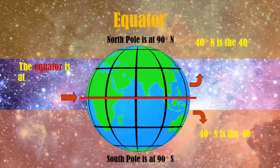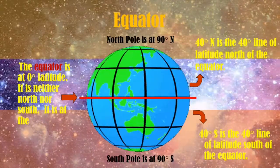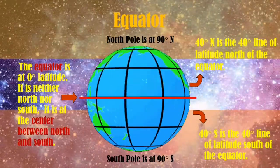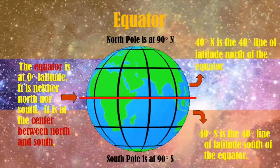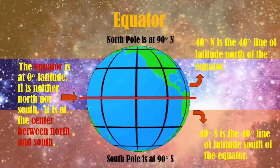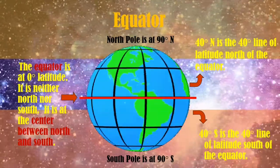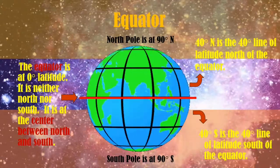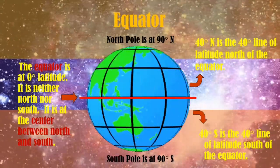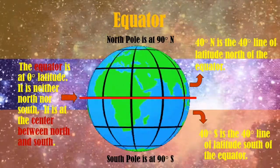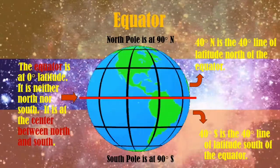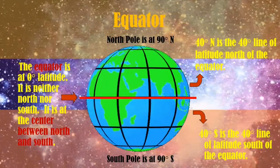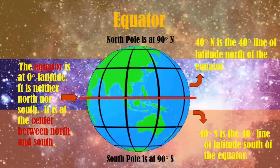How about the equator? The equator is an imaginary line around the middle of a planet or other celestial body, halfway between the north pole and the south pole at 0 degrees latitude. In short, it divides the planet into the northern hemisphere and the southern hemisphere. Being at 0 degrees latitude, it is neither north nor south.